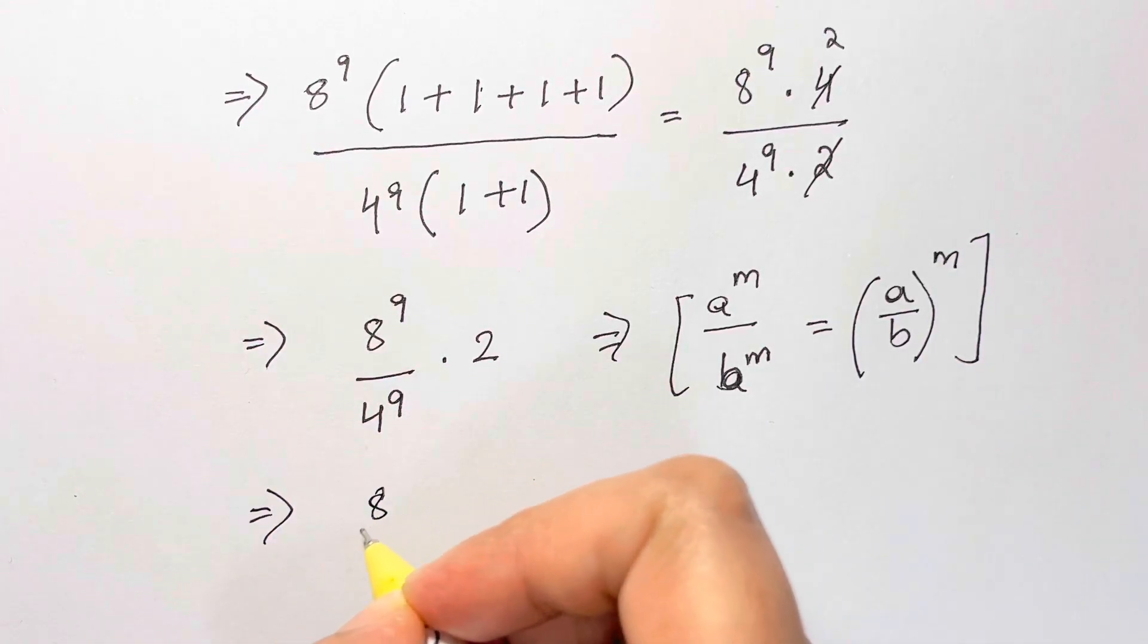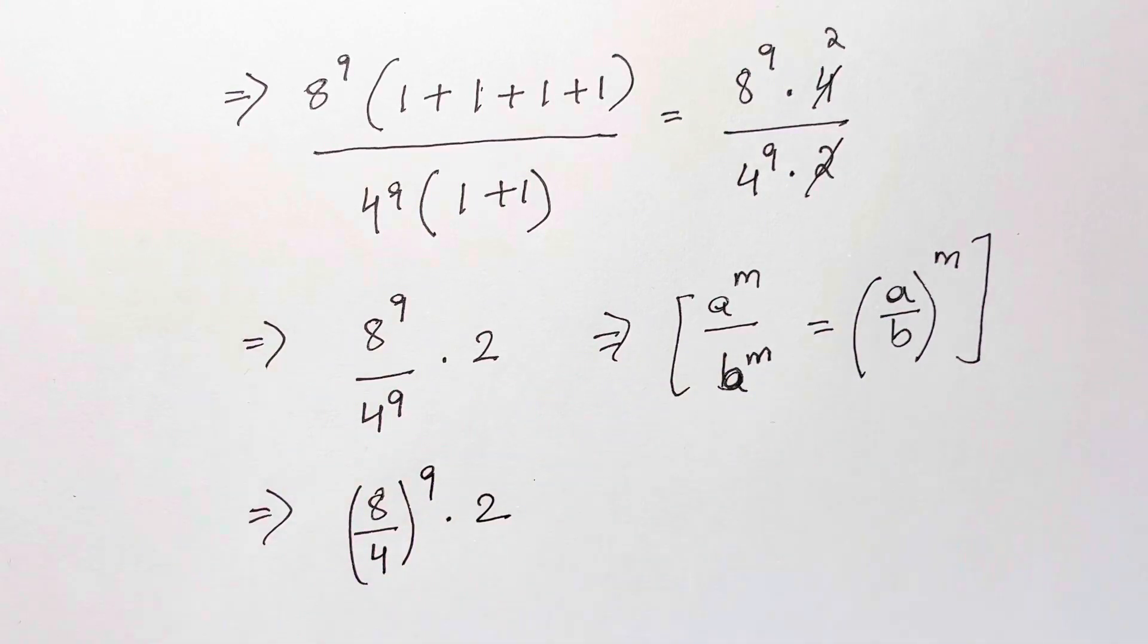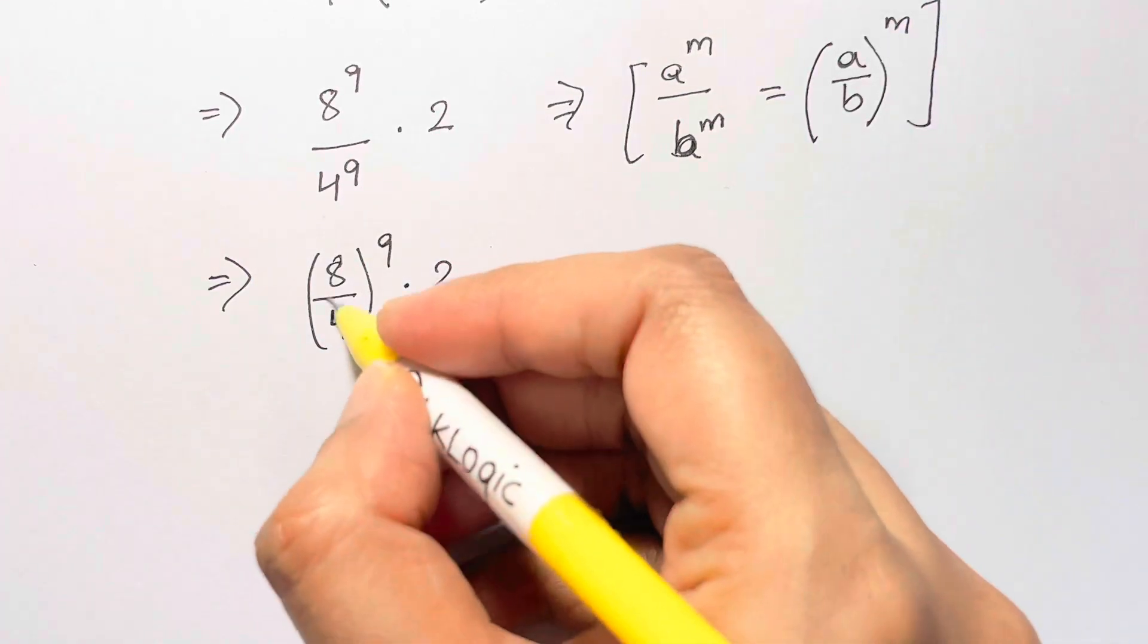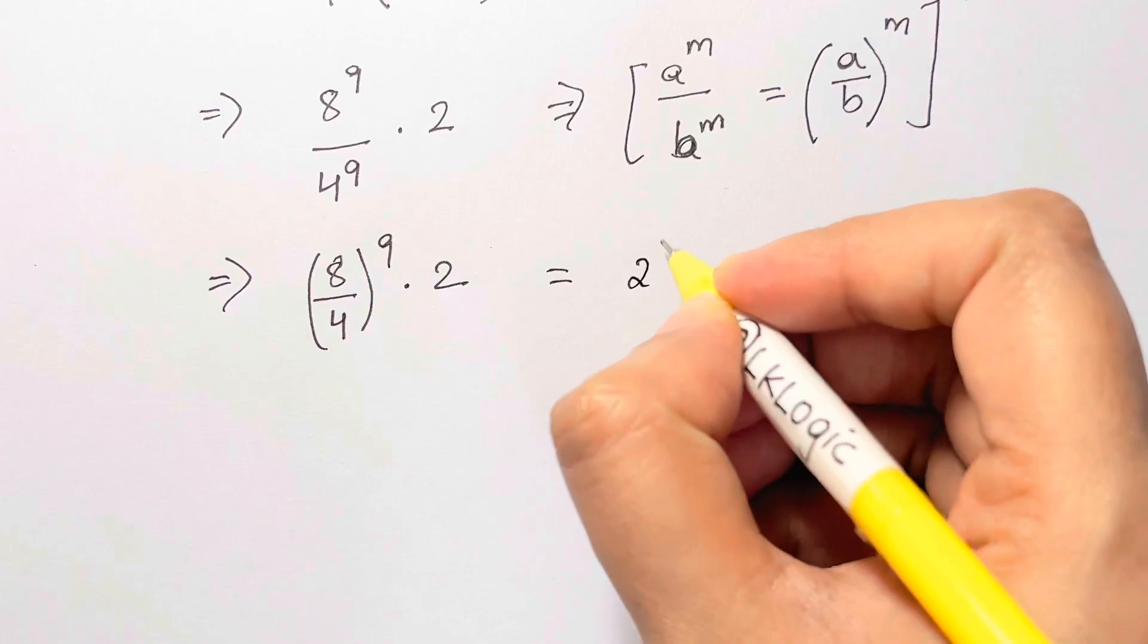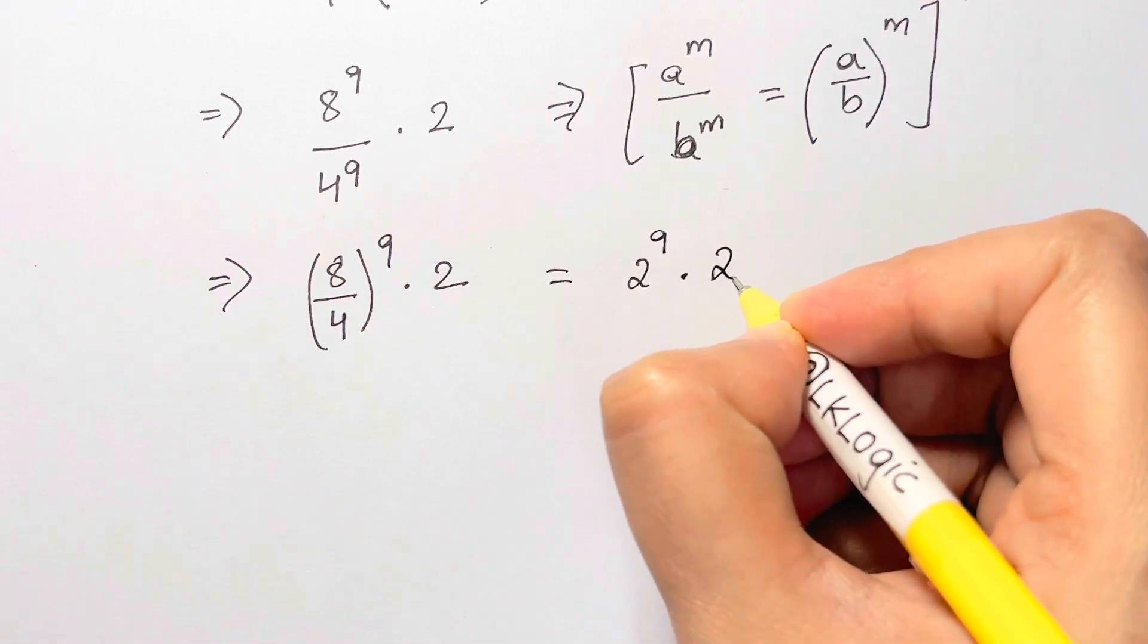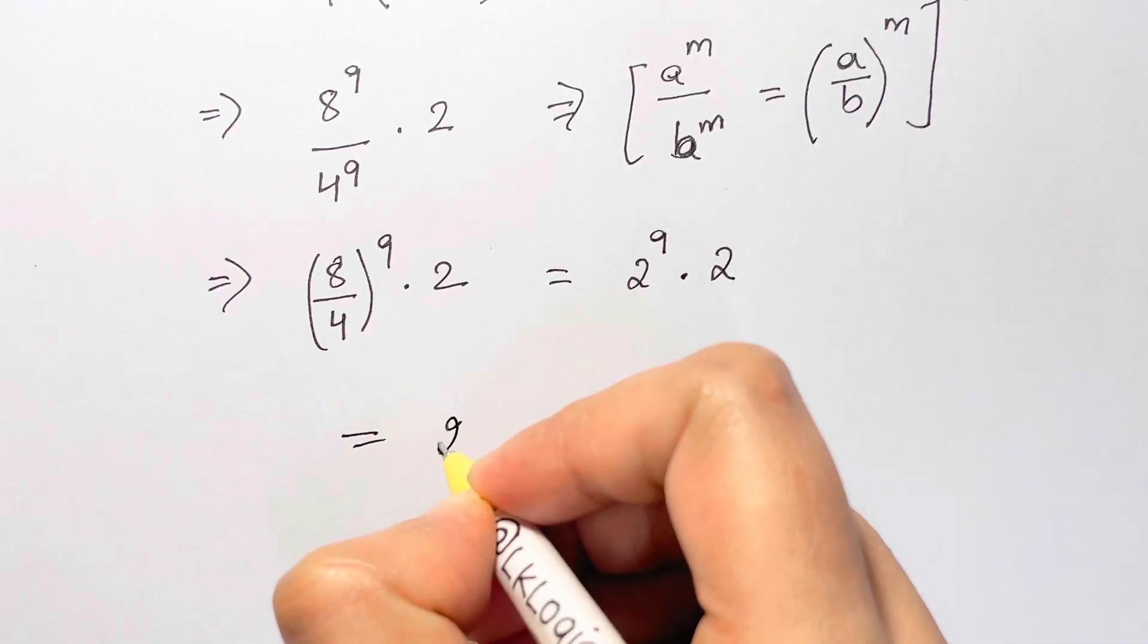So you have 8 over 4, whole to the power of 9, times 2. That equals, since 8 over 4 is 2, we get 2 to the power of 9 times 2, which is equal to 2 to the power of...